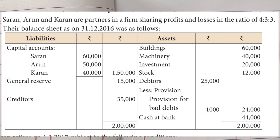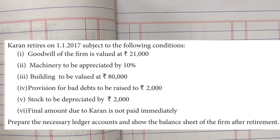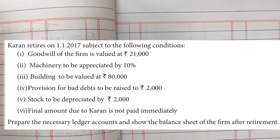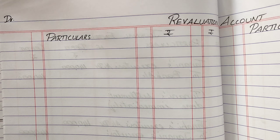The balance sheet as on 31/12/2016 shows general reserve and accumulated reserve on the liability side, which we will split up and give to the partners in the old ratio, credited to the capital account. The third partner, Karan, retires subject to the following conditions: goodwill of the firm will be recorded in the capital account. Points two to five relate to revaluation of assets and liabilities. Finally, the final amount due to Karan is not paid immediately, so it will be transferred to Karan's loan account.